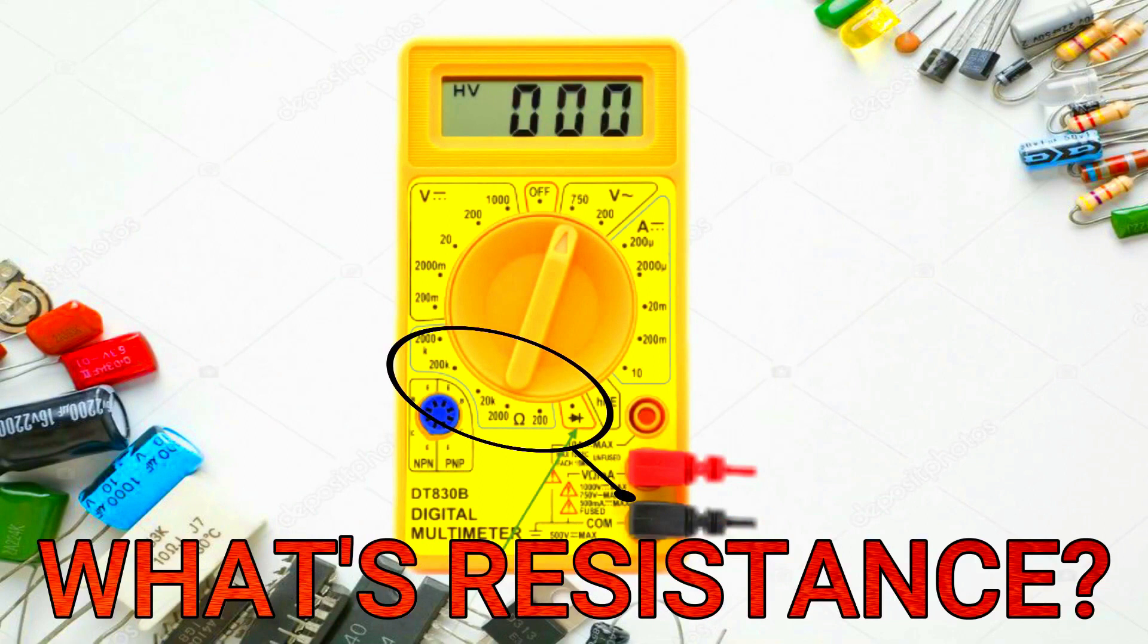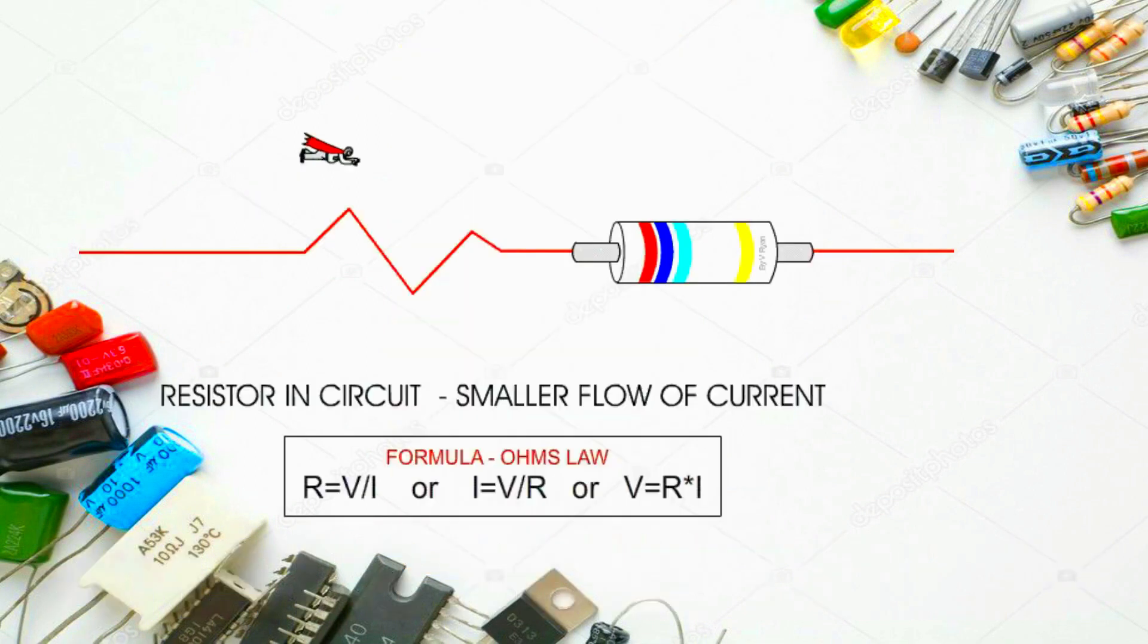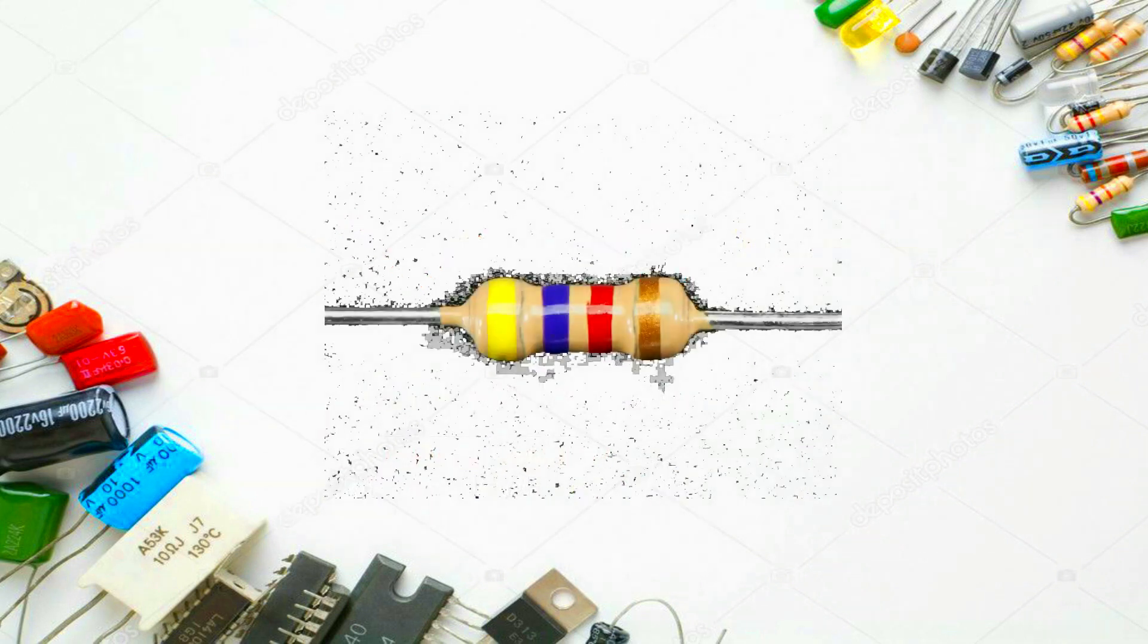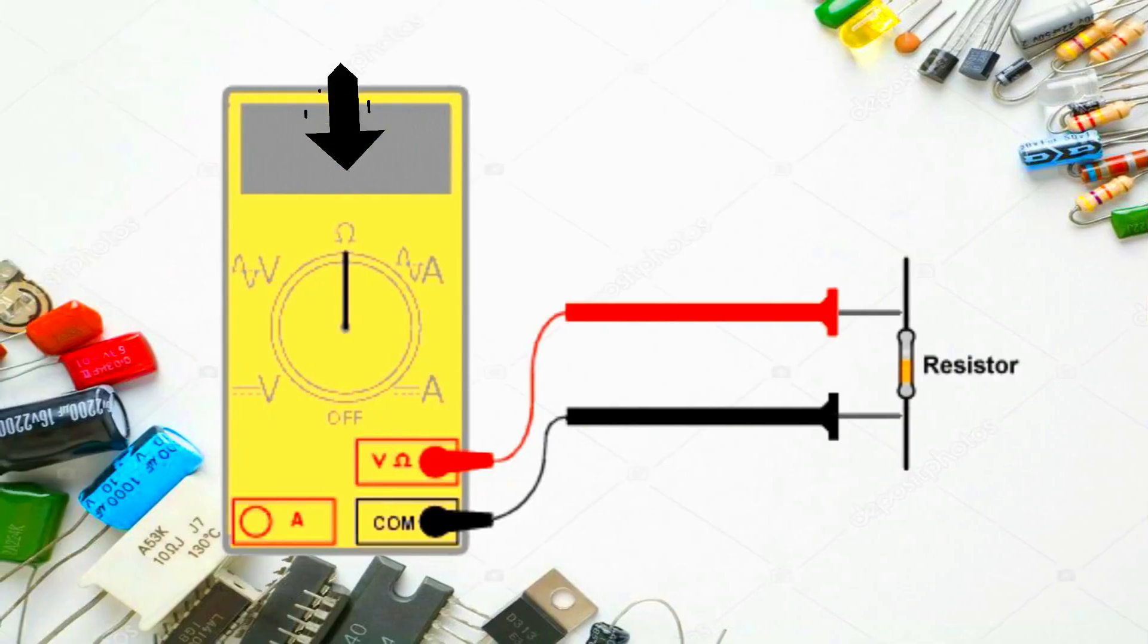What is resistance? Resistance is the measure of difficulty of electrons flowing through a particular object. It is similar to the friction an object experiences when moving or being moved across a surface. Resistance is measured in your multimeter.